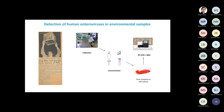Samples are collected using different methods — grab method and 24-hour composite samples — then concentrated using different procedures. In the case of poliovirus, we still use a virus isolation system. Cell cultures are used to detect samples positive for poliovirus, which are then sequenced and analyzed.